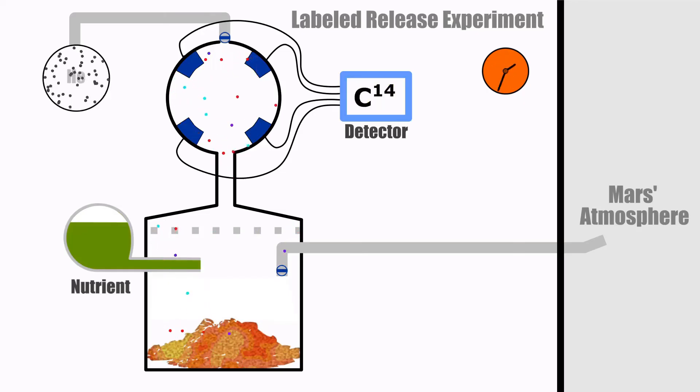The experiment is repeated but with sterilized soil. The actual results showed that Viking measured a high amount of radioactive CO2 in the normal sample when the nutrition solution was added, but very little in the sterilized sample. This is an indication of possible microorganism in the soil.